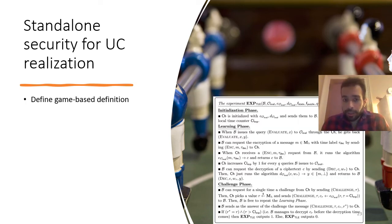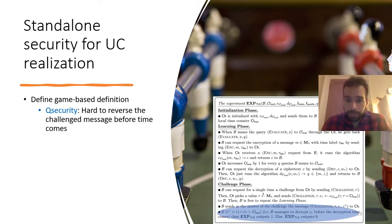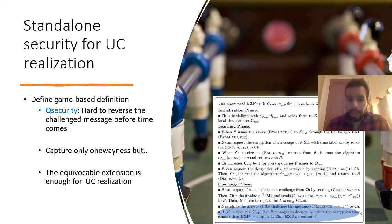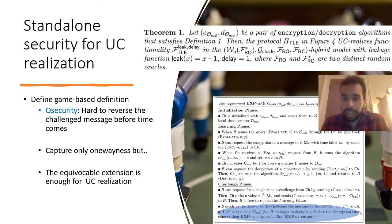To link the provided algorithm with the UC definition, we define a game-based definition called Q-security. Q-security states that it is hard to reverse the challenge message before the time comes. This captures only one-wayness and not semantic security, but with the equivocable extension in the random oracle model that I referred to earlier, it is enough for achieving a UC realization. So we have our first theorem, which states that if the provided time-lock encryption algorithm satisfies our game-based Q-security definition, then we have a UC realization.